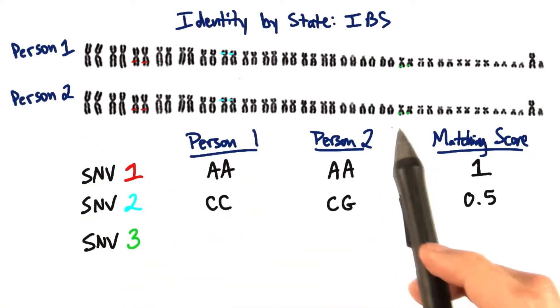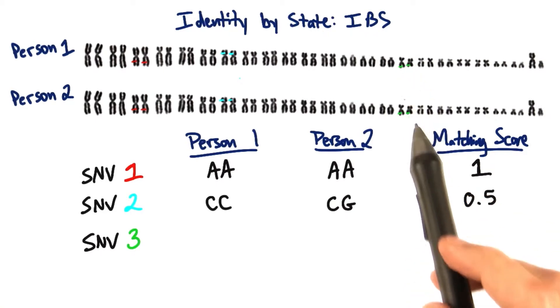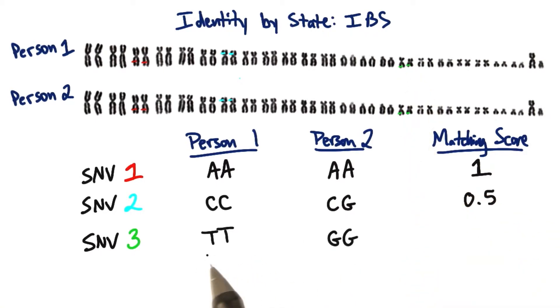And now let's look at this last SNV, SNV 3 here on chromosome 16. In this case, person 1 is homozygous T for SNV 3, but person 2 is homozygous G. There's no match at all. So the matching score in this case would be 0.